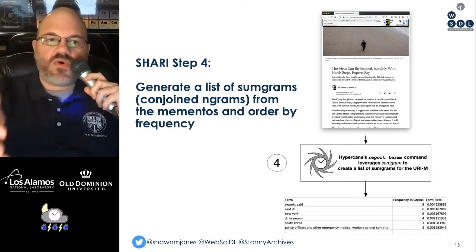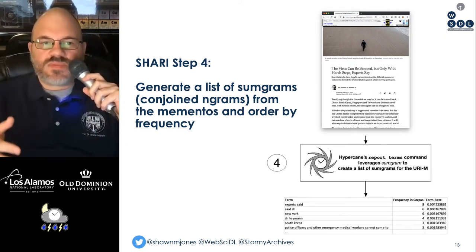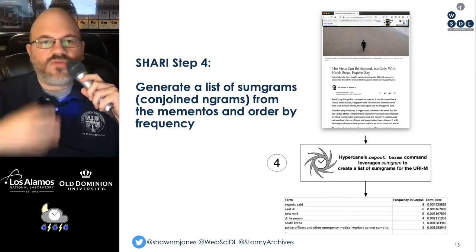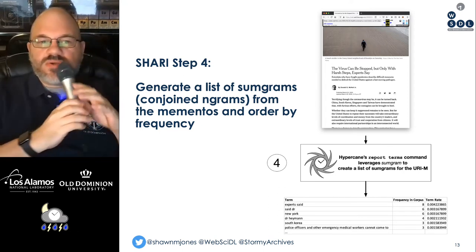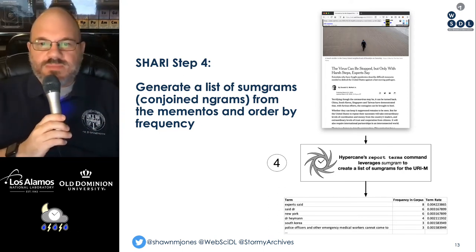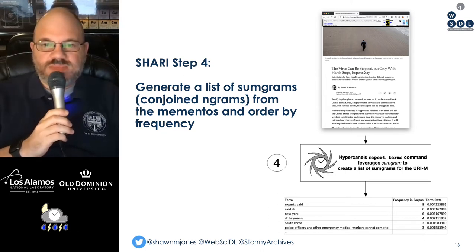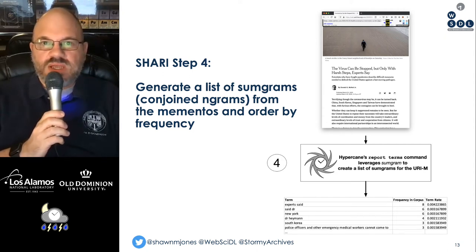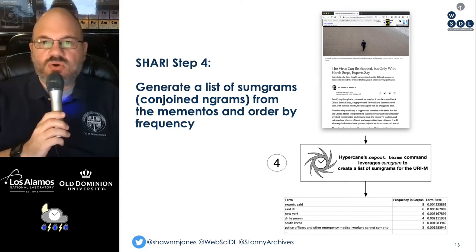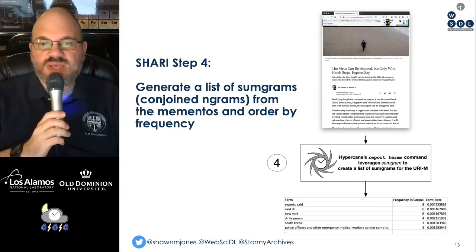In Sherry, step four, we generate a list of sumgrams — conjoined n-grams, or phrases — from the mementos and order them by frequency. Hypercane does this with its terms report, leveraging sumgram, which is another tool developed by Alexander Nawala, to produce these phrases. It gives us a report indicating the frequency in corpus and the term rate. If you have additional questions about sumgrams, I invite you to talk to Alexander Nawala.